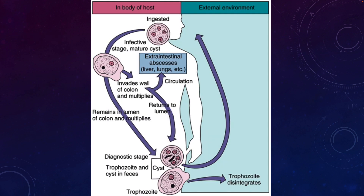Generally amoebic infections are thought of as gastrointestinal. A patient would ingest cysts which would exist often in the GI tract, and the trophozoites, which is the metabolically active motile form, can invade the colon and multiply, or they can remain in the lumen and multiply. Some amoeba are good at escaping the intestines and can form lesions in the liver, the lungs, etc. And then they'll be passed in the feces.